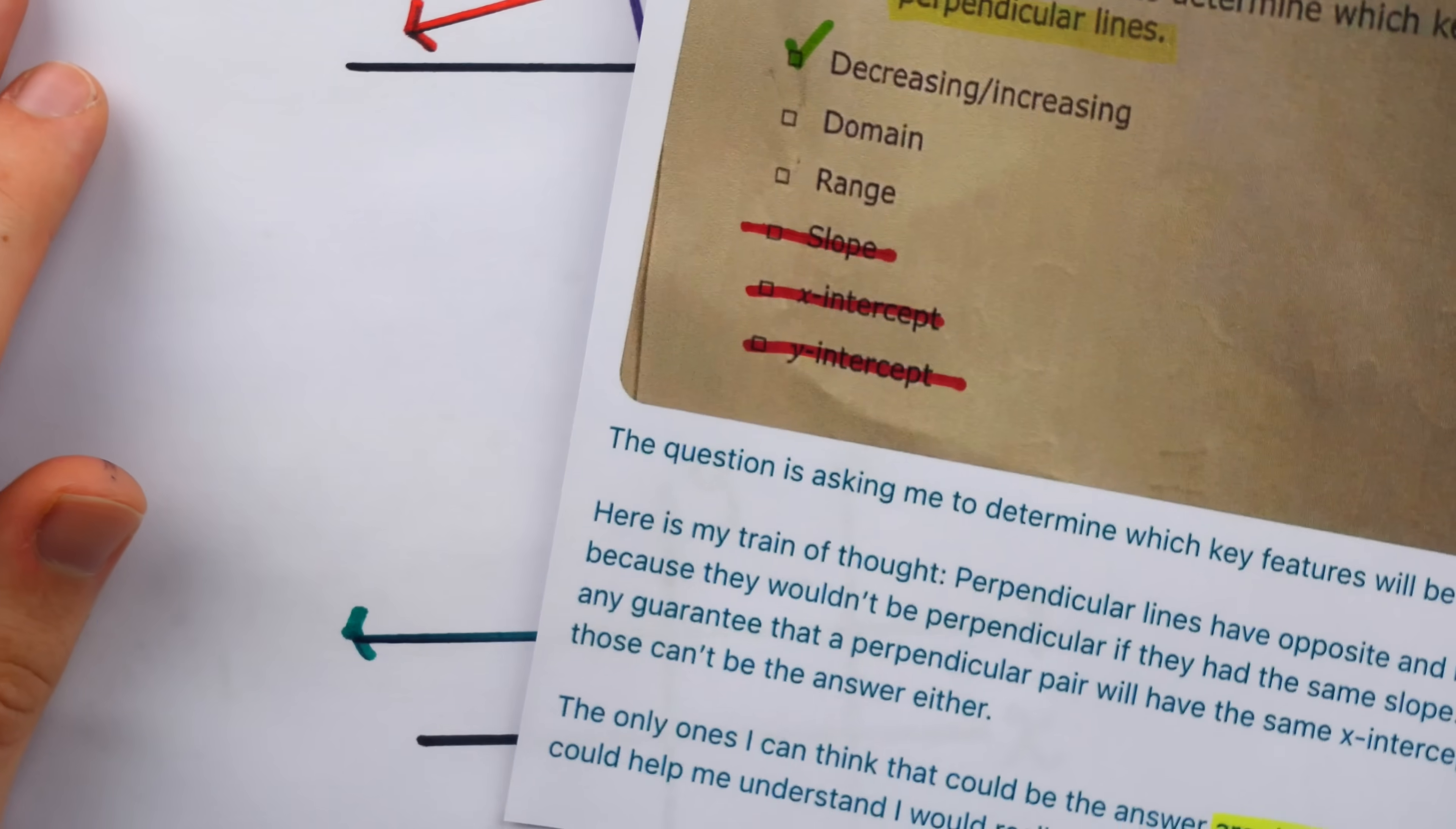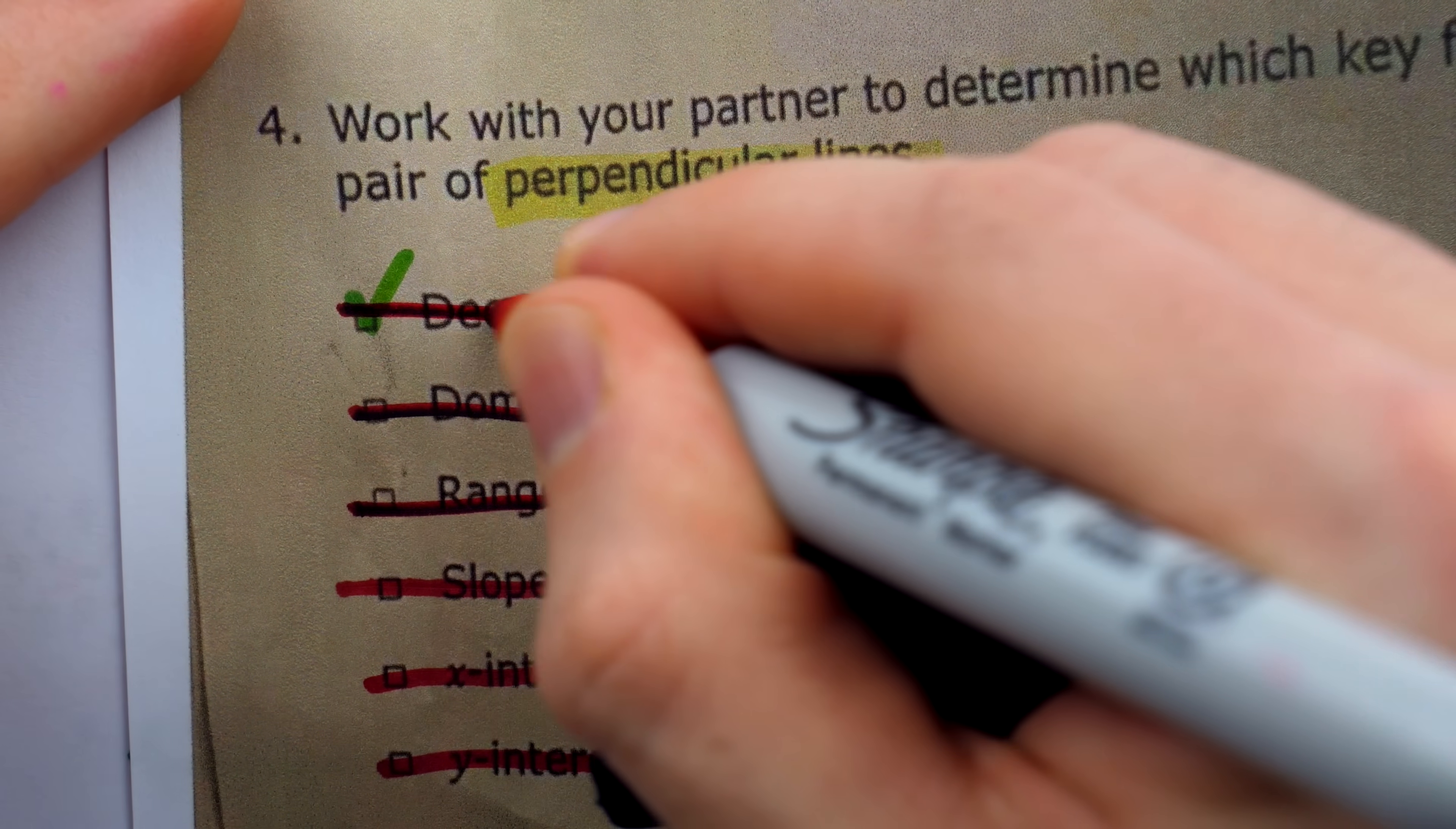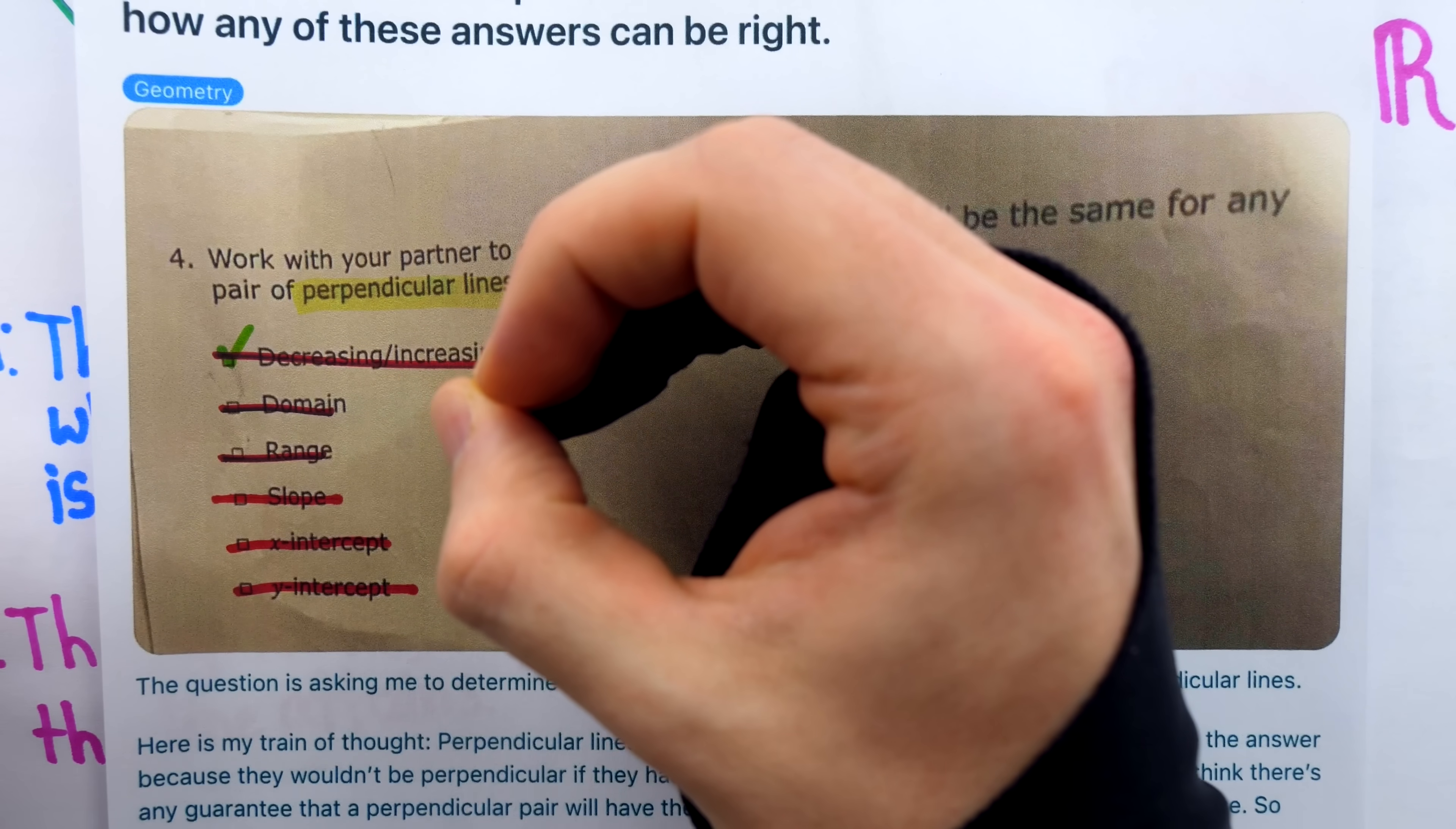Alright, so we might think this is a bit of a problem. We were supposed to check which key features would be the same, but we've concluded none of them will be the same. This feels like a problem, but it doesn't have to be. It would have been nice if the problem threw in an 'if any' right here. But still, there's nothing saying that we must check any particular number of these features.